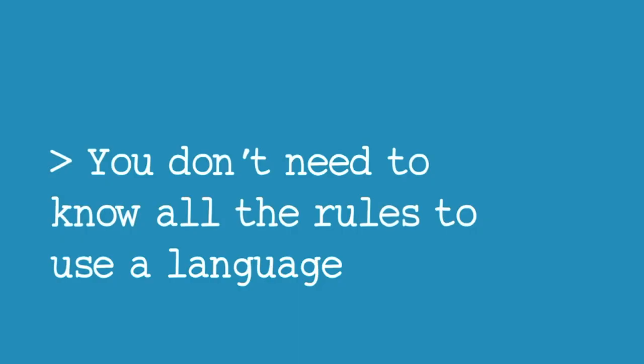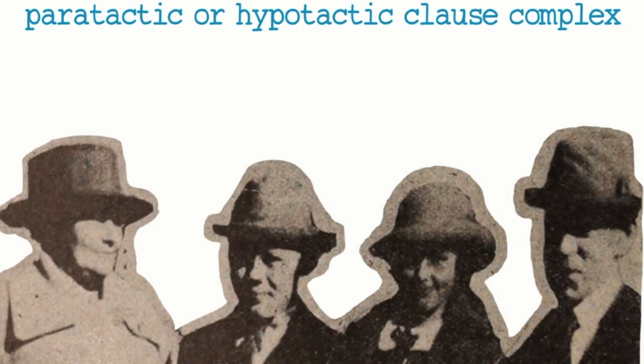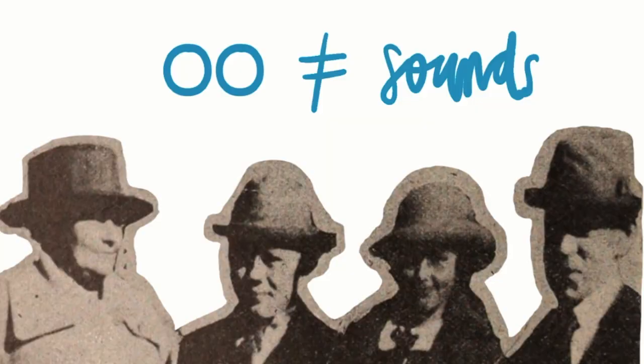You don't need to know all the grammar rules to be understood in a language, and you don't need to know the name of all its structures to be competent users. Even native speakers don't know the name of all the parts. You probably don't know what a paratactic or hypotactic clause complex is, but you definitely know how to use one. If you're a native English speaker, you know how to correctly pronounce every case of two O's together in words like moon, book, floor, flood — something very difficult for non-native speakers.